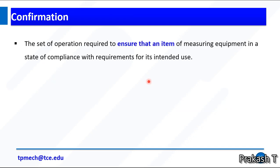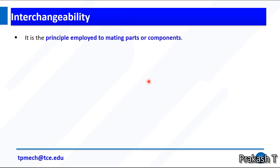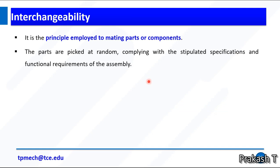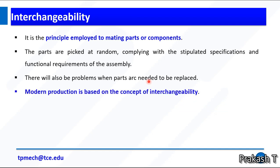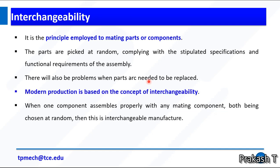Confirmation: the set of operations required to ensure that an item of measuring equipment is in a state of compliance with the equipment for its intended use. Interchangeability is the principle employed for mating parts or components. The parts are picked at random, complying with the stipulated specifications and functional requirements of the assembly. Modern production is based on the concept of interchangeability. When one component assembles properly with any mating component, both being chosen at random, then this is interchangeable manufacture. It is uniformity of size of the components produced which ensures interchangeability.